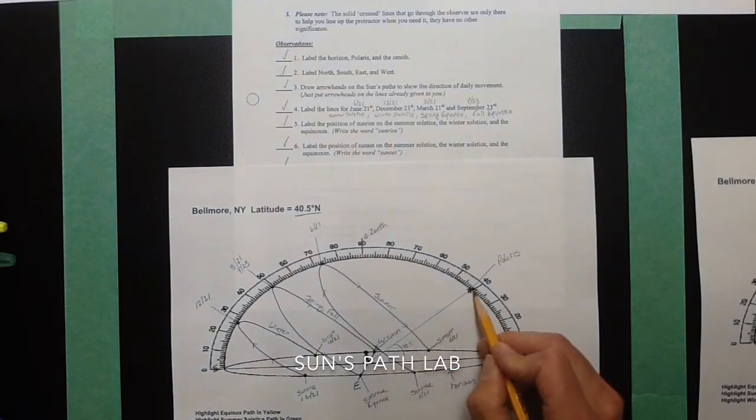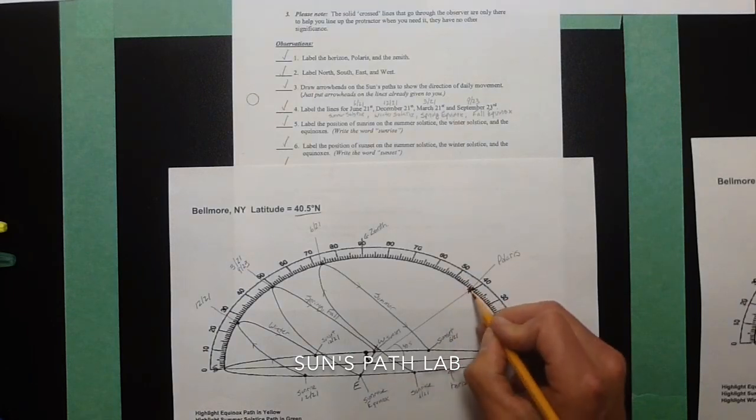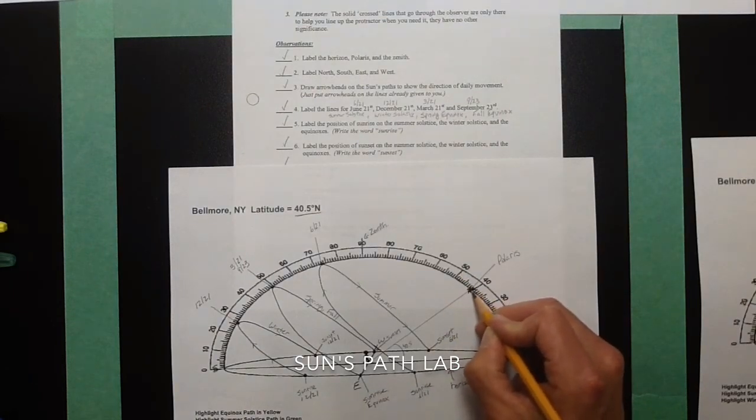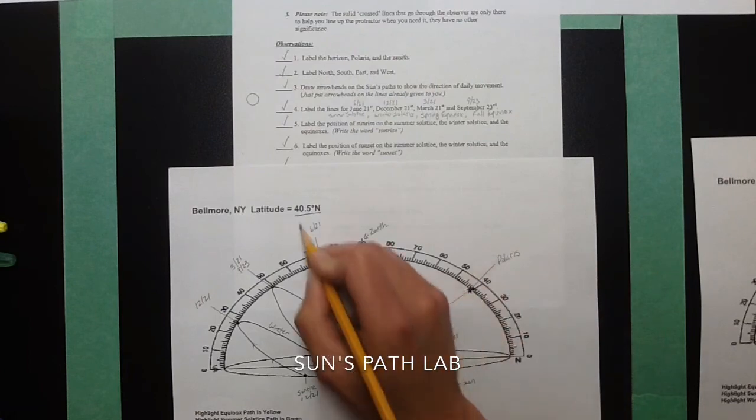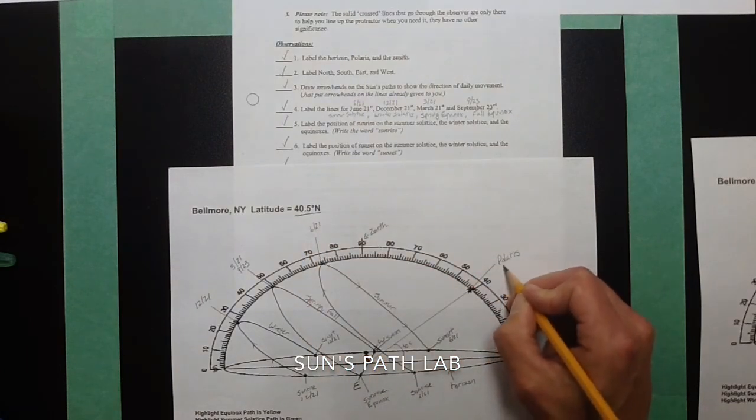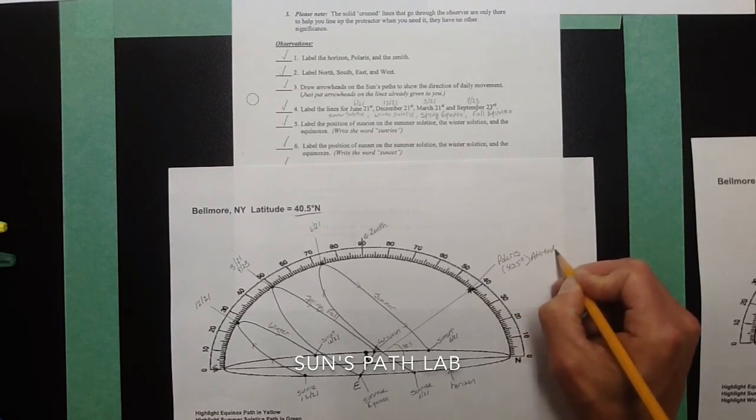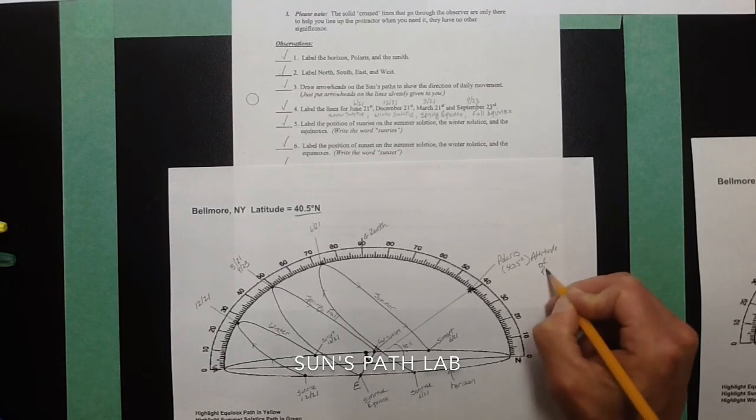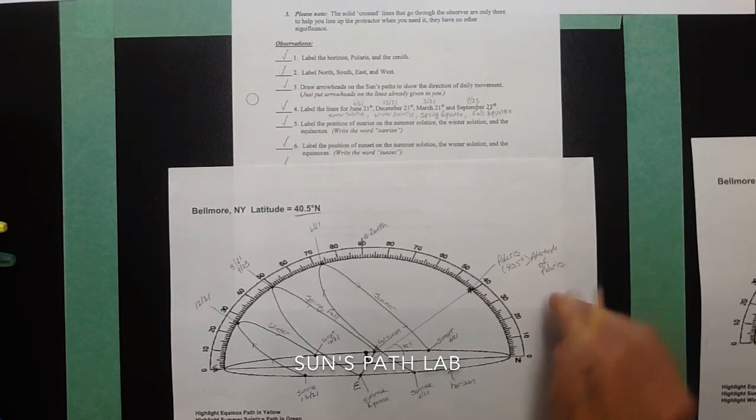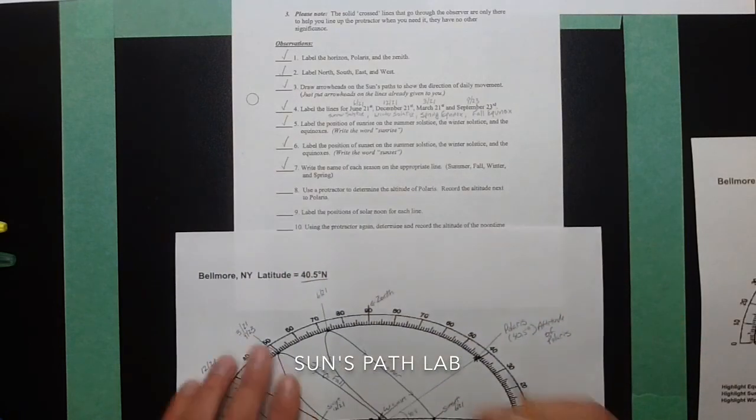All right. When you're looking at this, your protractor is on the outside. And this is slightly up. You can't even tell because of this. But it's half of a mark up from 40. So, since the latitude is 40.5 degrees north, 40.5 degrees would be the altitude of Polaris.